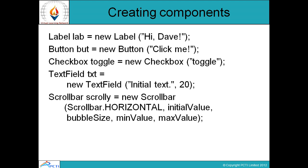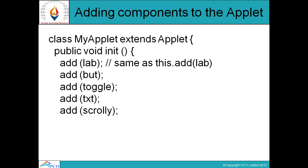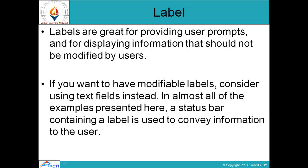Now I have created the components. We have not yet added the components into the container. This is adding a component to the applet. In a particular class we will add whichever components we have created into our container using the predefined add() method. By using the add() method we can add label, button, and other components into the applet.